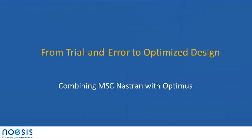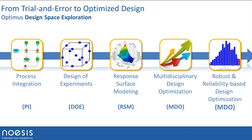Now let's see the key features of the product. Optimus is a PIDO software — Process Integration and Design Optimization — meaning in a first step the user captures and automates an existing process, such as MSC Nastran, MSC Marc, or Mentat simulations. Based on this integration, we perform smart sampling through design of experiment, prediction of behavior through response surface modeling, optimization for multidisciplinary or multi-objective problems, and robustness and reliability analysis — essentially Six Sigma design or RBDO.